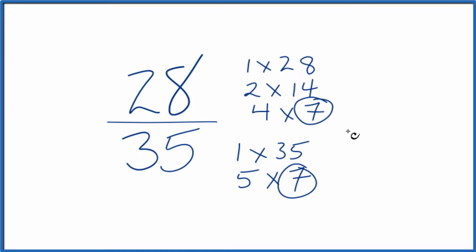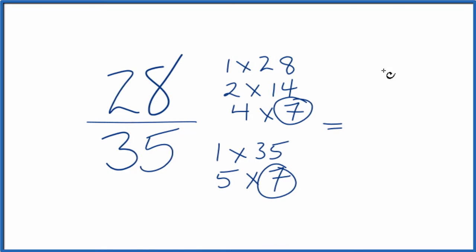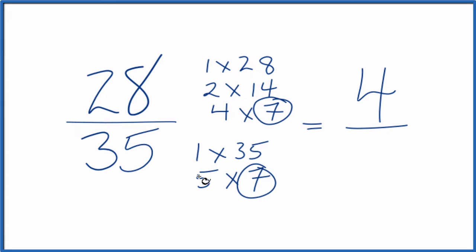So we divided 28 by 7 and we got 4. And then we divided 35 by 7 and we got 5. So we ended up with 28 35ths equaling the fraction 4 fifths. And again, these are equivalent fractions. They have the same value. It's just that we reduced or simplified 28 35ths down to 4 fifths.